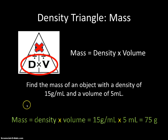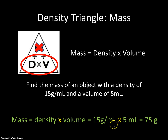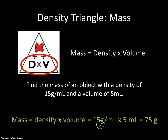Mass equals density times volume, which equals 15 grams per milliliter times 5 milliliters. We multiply the numbers: 15 times 5 equals 75. Because we have a grams-per-milliliter unit and a milliliter unit, the milliliters cancel out, and we're left with grams only. So our answer is 75 grams. We double-check: 15 times 5 is 75, our answer is in grams, and grams is a unit of mass — so this should be correct.